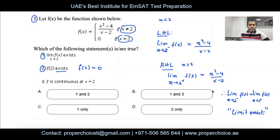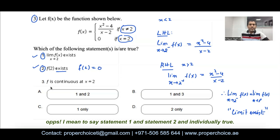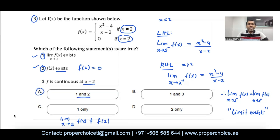The limit as x → 2 exists and f(2) also exists — both statements are true. I need to select the option where Statement 1 and Statement 2 are both true, which is option A. That's it for today!